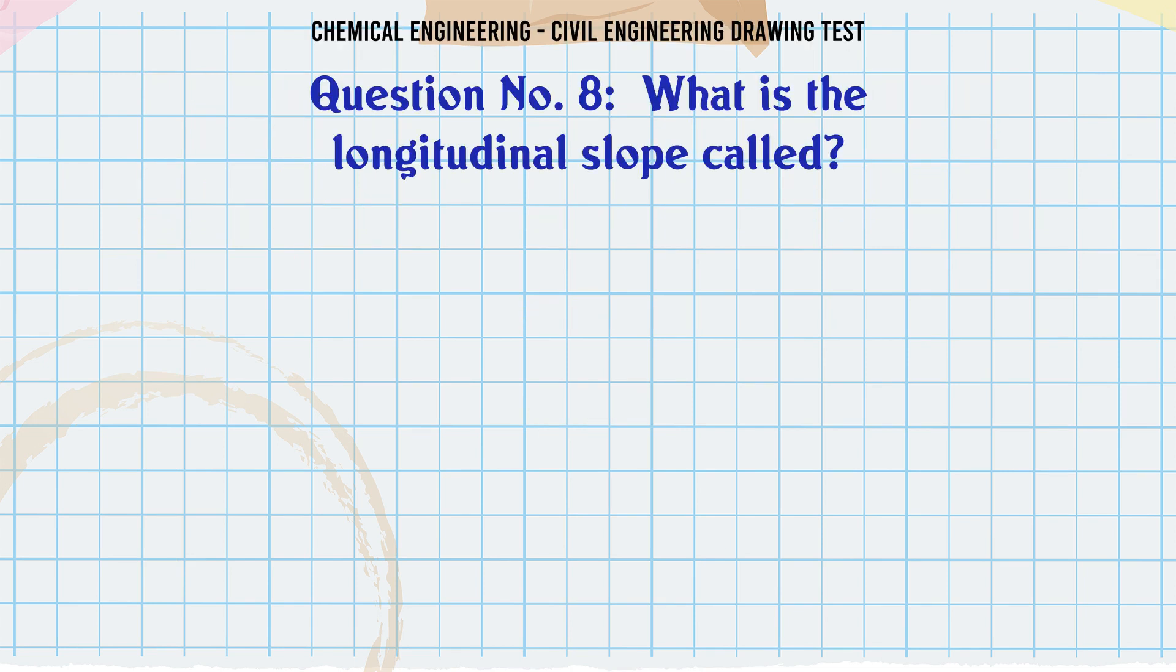What is the longitudinal slope called? A. Curb. B. Horizon. C. Grade. D. Lift. The correct answer is Grade.